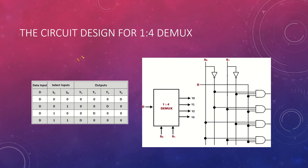Let's design the circuit for a 1-to-4 DMUX. We have data input D, select inputs S0 and S1, and four outputs Y0, Y1, Y2, and Y3. When select lines are 0-0, the input connects to Y0. When S0 is 1 and S1 is 0, it connects to Y1. When S0 is 0 and S1 is 1, you get it on Y2. When both are 1, you get it on Y3.